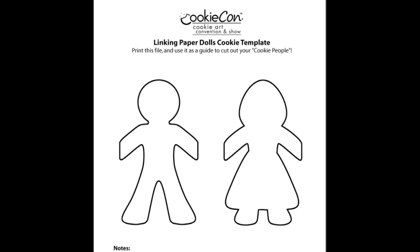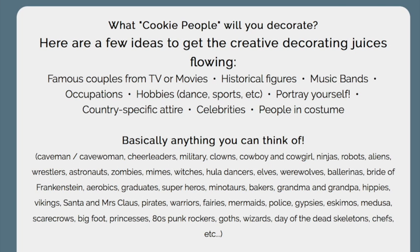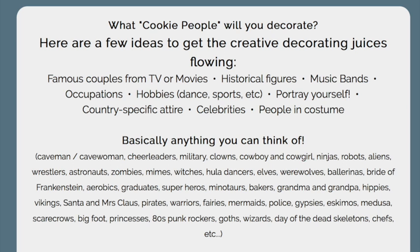These were the things they suggested: you can make famous couples from TV or movies, historical figures, music bands, occupations, hobbies like dance or sports, a portrait of yourself, country-specific attires, celebrities, and people in costumes. It was very hard for me to choose because when I read the guidelines, a lot of ideas came into my mind and I was not sure what to do.